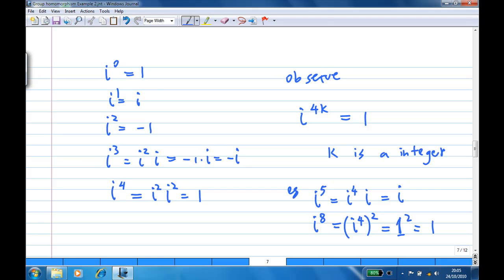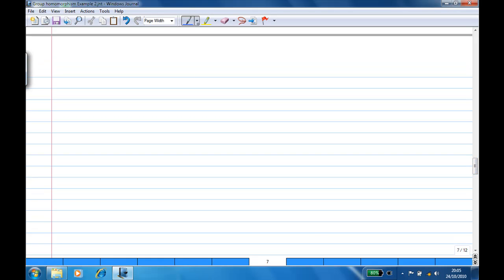So we know that the kernel of this homomorphism will be all the m as an integer where i^m is 1. Therefore, m is a multiple of 4, so m = 4k.